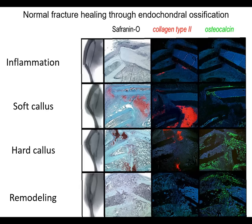Here are the stages of fracture healing shown under micrographs from animal fractures. You can see the inflammatory phase initially with a little bit of bleeding. Then the soft callus phase with a lot of cartilage being formed and collagen type 2. Then a hard callus where you start to see osteocalcin deposition and bone formation. And then the remodeling phase shown on the bottom.